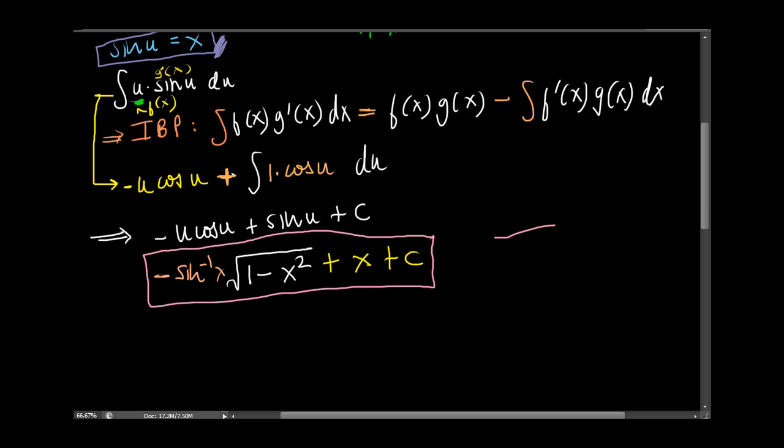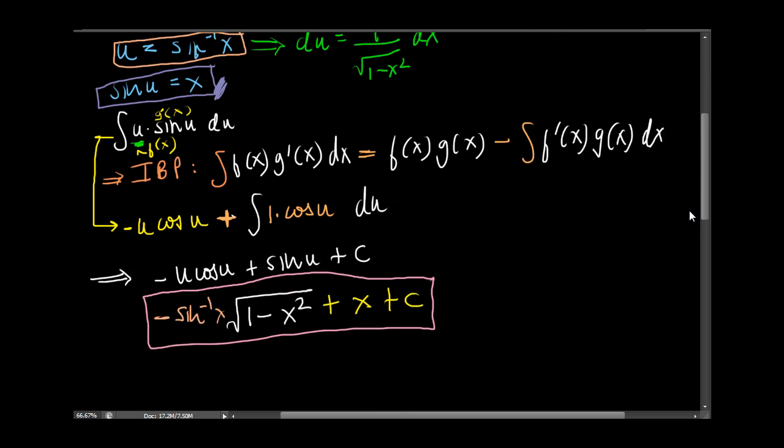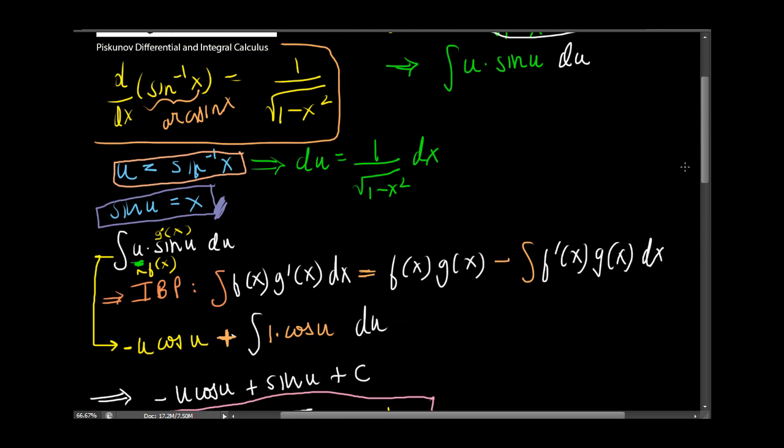This is our final answer to this problem, the integral of x arc sine of x divided by the square root of 1 minus x squared dx. I hope you like it, and I'll see you in the next video.